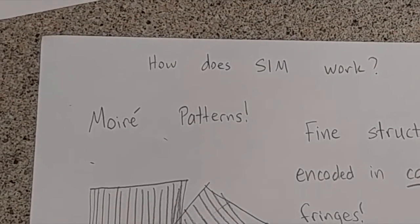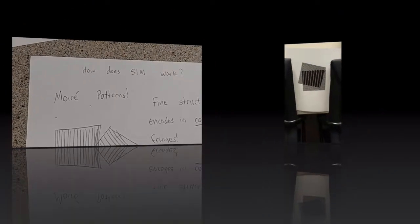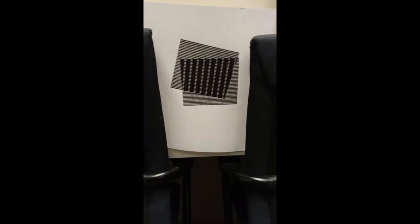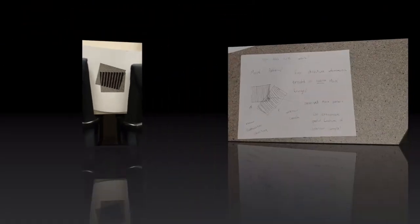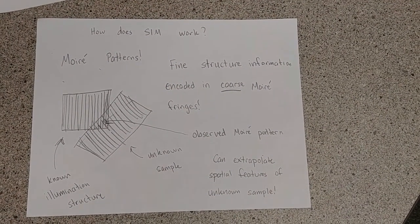SIM tries to get past that by using moiré patterns. So, you remember moiré patterns there. You take two line patterns and overlap them together, you're going to get some interference like this.